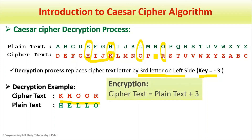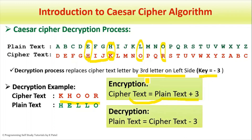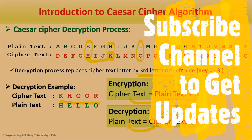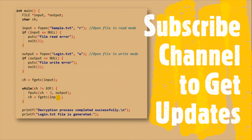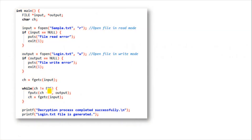To summarize: during encryption, we add 3 to the plaintext character to generate the ciphertext character. During decryption, we subtract 3 from the ciphertext character to generate the plaintext character. This is the reason why we are subtracting 3 in our decryption program.